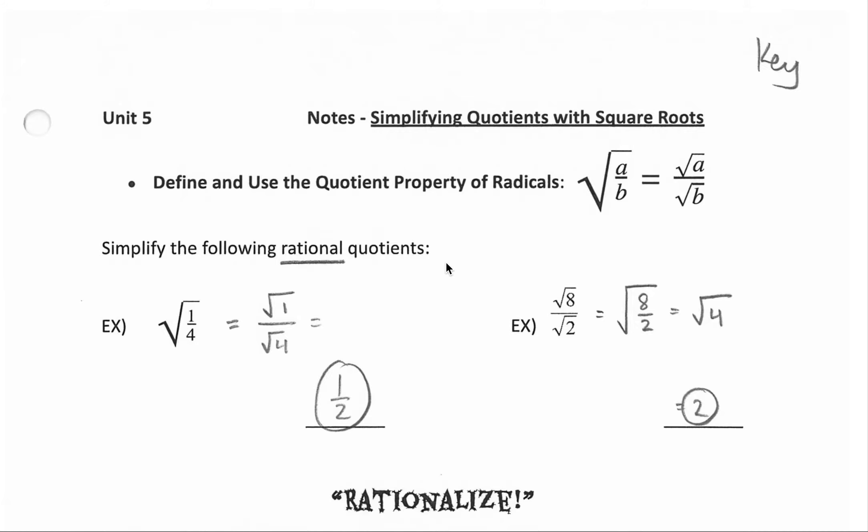In this video we're going to be talking about how we can simplify quotients with square roots so that we can talk about some properties of special right triangles. In using properties of special right triangles, sometimes we have to divide by a square root, so let's talk about that skill first.